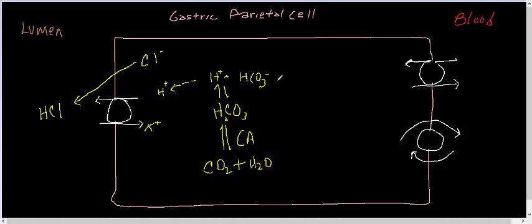Bicarbonate ion will be secreted across the basal portion of the parietal cell into the venous blood, and this will occur via a chloride bicarbonate exchanger.